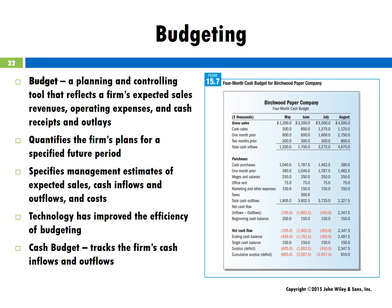Although the financial statements discussed in this chapter focus on past business activities, they also provide the basis for planning in the future. Technology has improved the efficiency of the budgeting process. The cash budget is one of the most important budgets prepared by a firm. Because the accounting department is the organization's financial nerve center, it provides much of the data for budget development.